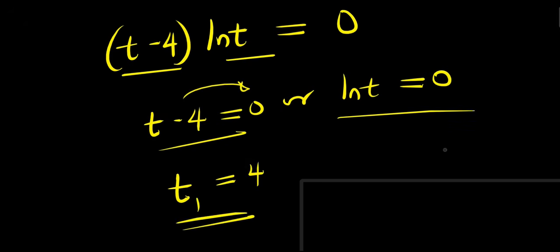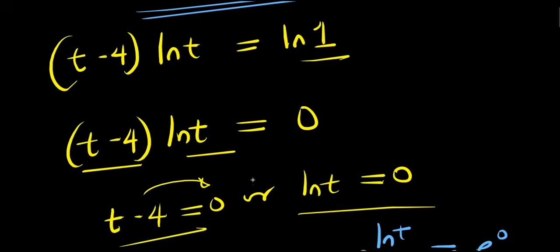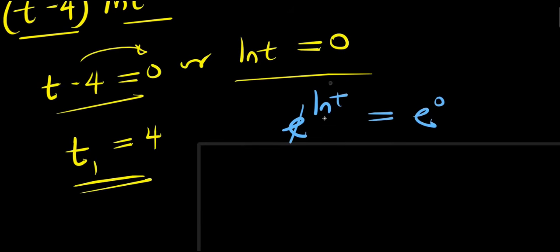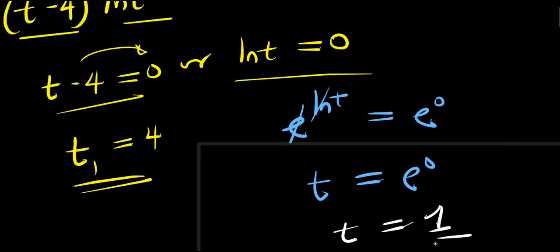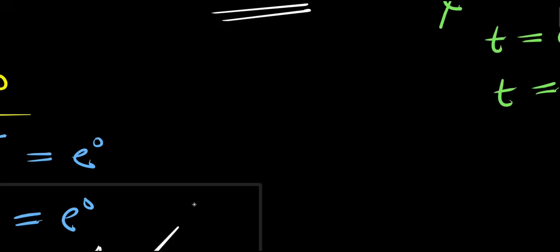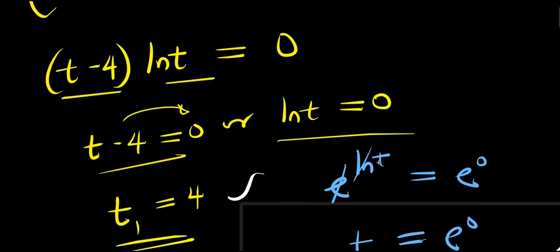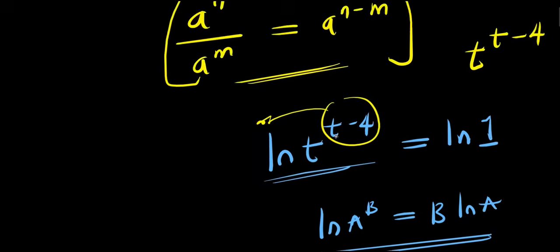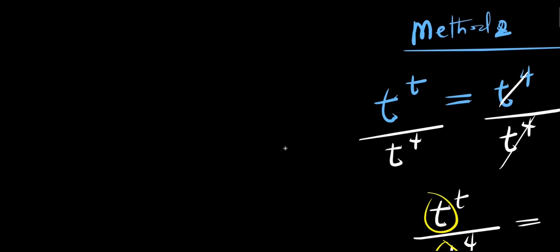For the other factor, ln(t) equals 0: raising e to both sides, e to the power of ln(t) equals e to the power of 0. The e and ln cancel, giving t equals 1. Both methods give the same two solutions, and this appears to confirm there are only two solutions for this exponential problem.